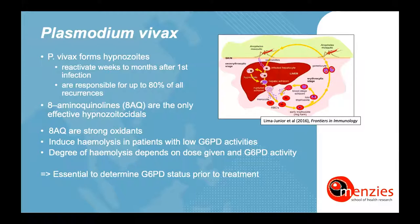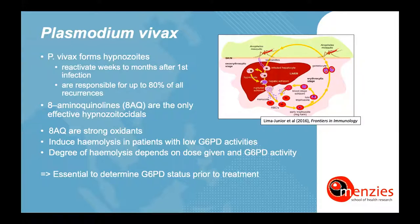Following an infection with Plasmodium vivax, the parasite forms blood stages that cause symptoms, as well as metabolically inactive liver stages called hypnozoites. Depending on geographic location, hypnozoites reactivate weeks to months after the first infection, causing symptomatic relapses. In some locations, relapses can make up to 80% of all vivax cases. The only class of drugs that effectively remove hypnozoites are the 8-aminoquinolines, namely primaquine and the recently licensed tafenoquine. Both drugs are strong oxidants and induce varying degrees of hemolysis in G6PD-deficient patients, making routine testing essential for safe administration.